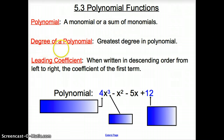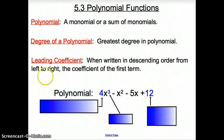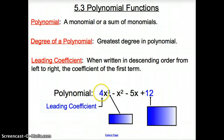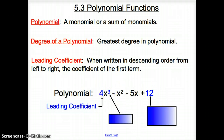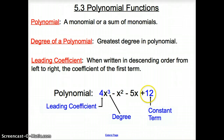Something new here: a degree of a polynomial is the greatest degree in the polynomial. And then the leading coefficient — when the polynomial is written in descending order from left to right so the powers or degrees get smaller — it's the coefficient of the first term. So using this polynomial as an example, this 4 would be the leading coefficient, this 3 would be the degree, and this 12 is the constant term.